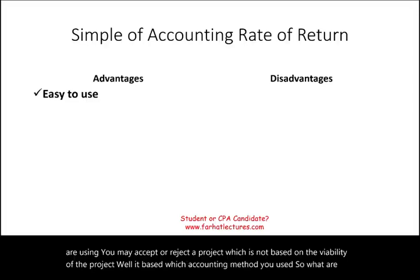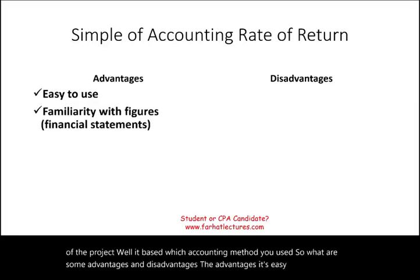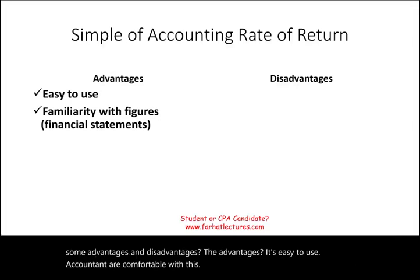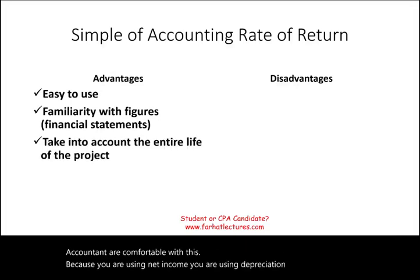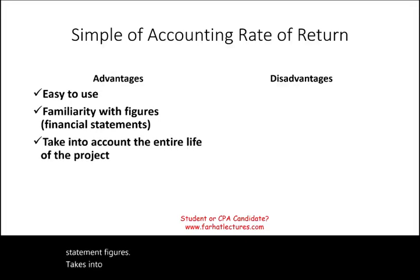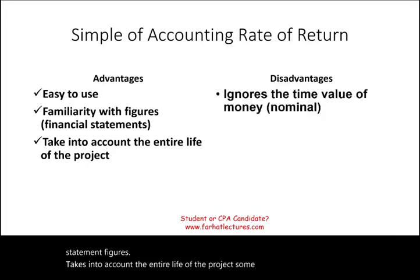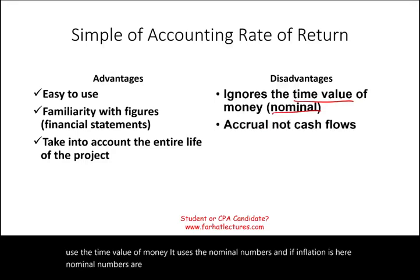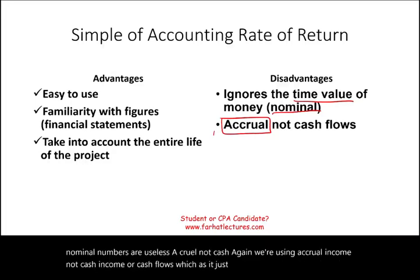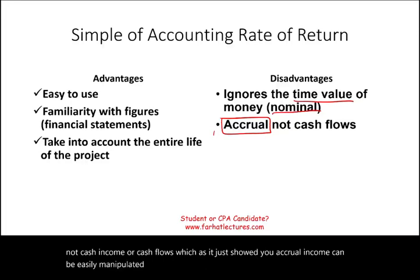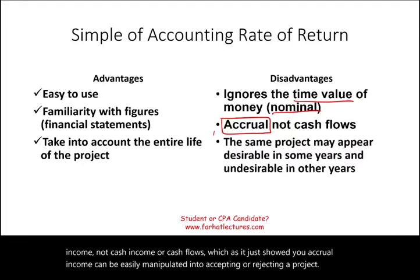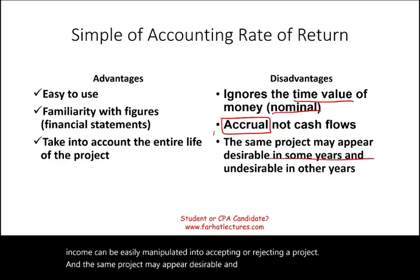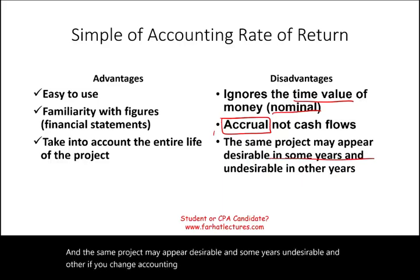Advantages of ARR: it's easy to use, accountants are comfortable with it since it uses net income, depreciation, and financial statement figures, and it takes into account the entire life of the project. Disadvantages: it ignores the time value of money and uses nominal figures, which are meaningless under inflation. It uses accrual income rather than cash flows, meaning accrual income can be manipulated to accept or reject a project. The same project may appear desirable in some years and undesirable in others if accounting methods change.